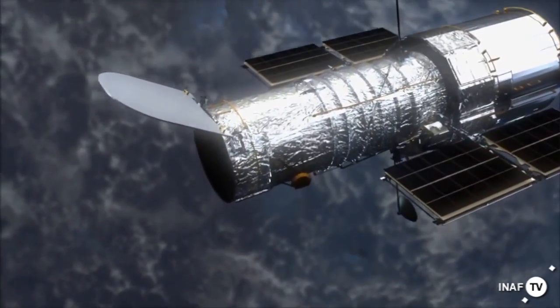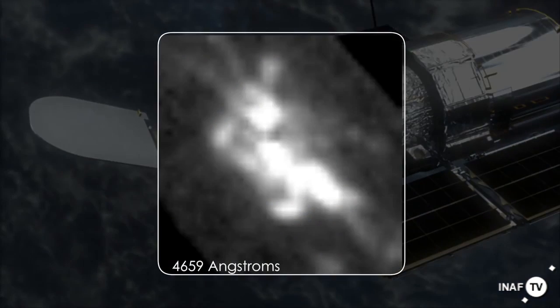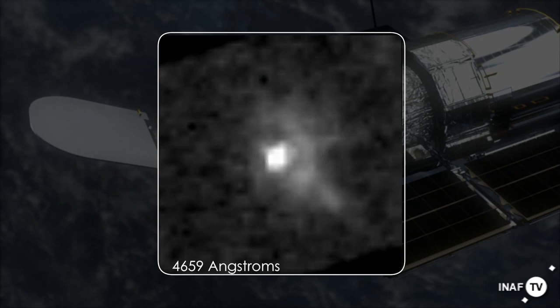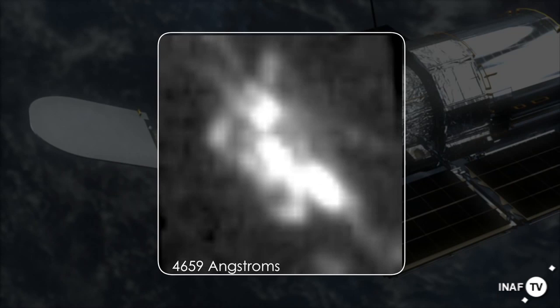The Space Telescope Imaging Spectrograph, which I helped build—I guess it shows my gray hairs—we initially started building in 1984. We put it into Hubble in 1997, used it until around 2004 when it failed. Astronauts went up during Servicing Mission 4 and repaired it. The first thing we did was an observation of Eta Carina to show it was back in operation, and indeed, for the past five and a half years I've been following it with Hubble.